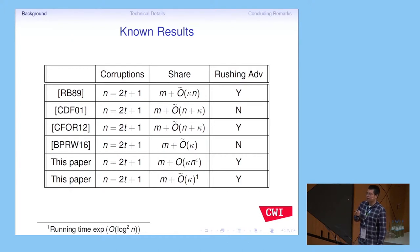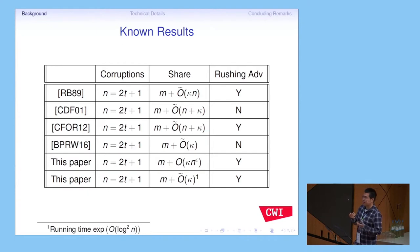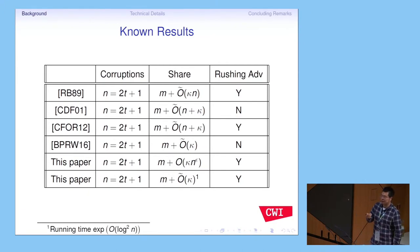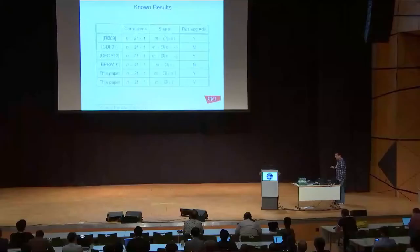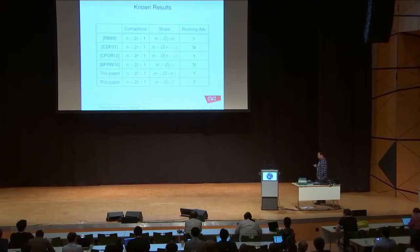There is another paper — a Eurocrypt 2016 paper — that achieved the optimal share size; however, it is not in the Russian adversary model. By the way, all these listed results achieve maximum corruption, meaning the number of corrupted parties is only one less than the number of honest parties. This is the most difficult situation to handle.